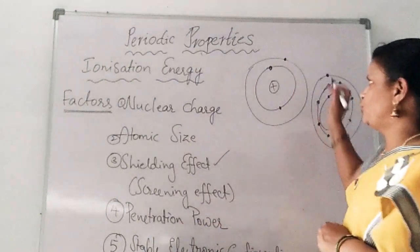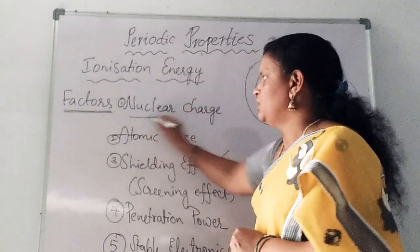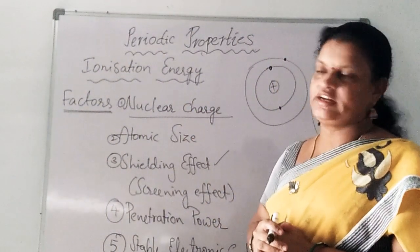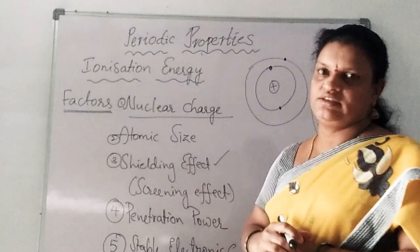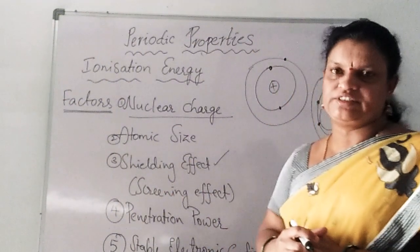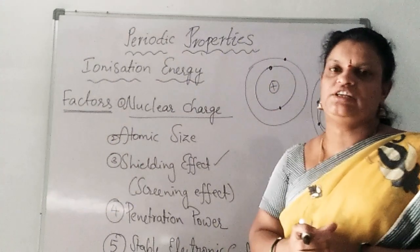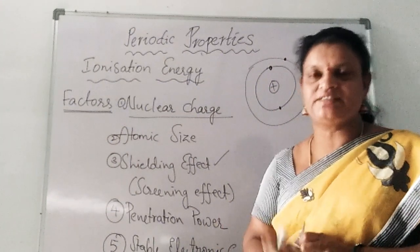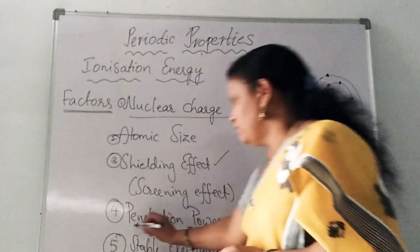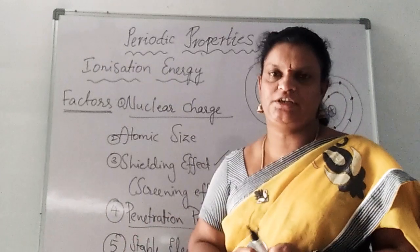Shielding effect is more → ionization energy is less. To summarize so far: nuclear charge is directly proportional to ionization energy; atomic size is inversely proportional; and shielding effect is also inversely proportional. Now we will go to the next factor — penetration power or penetration effect.